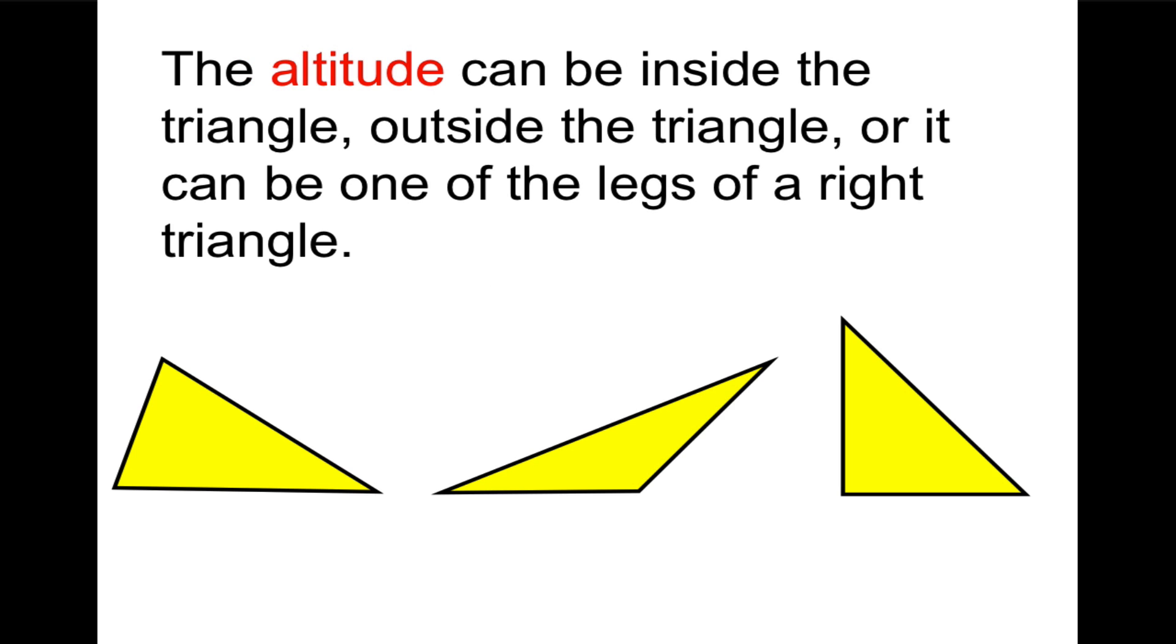Now, it turns out that the altitude can be inside the triangle. It could be outside the triangle, or it could be one of the legs of the triangle if it's a right triangle. So there's three different cases of the altitude, but always the altitude comes down to be perpendicular to the base. Notice that we draw the altitude as a dotted line. That's because it's not actually part of the triangle. So similar to how we drew the line of reflection as a dotted line, because it wasn't actually part of the graph, this is not actually a physical part of the triangle. It's something we can measure about the triangle, but it wouldn't be included in the perimeter.